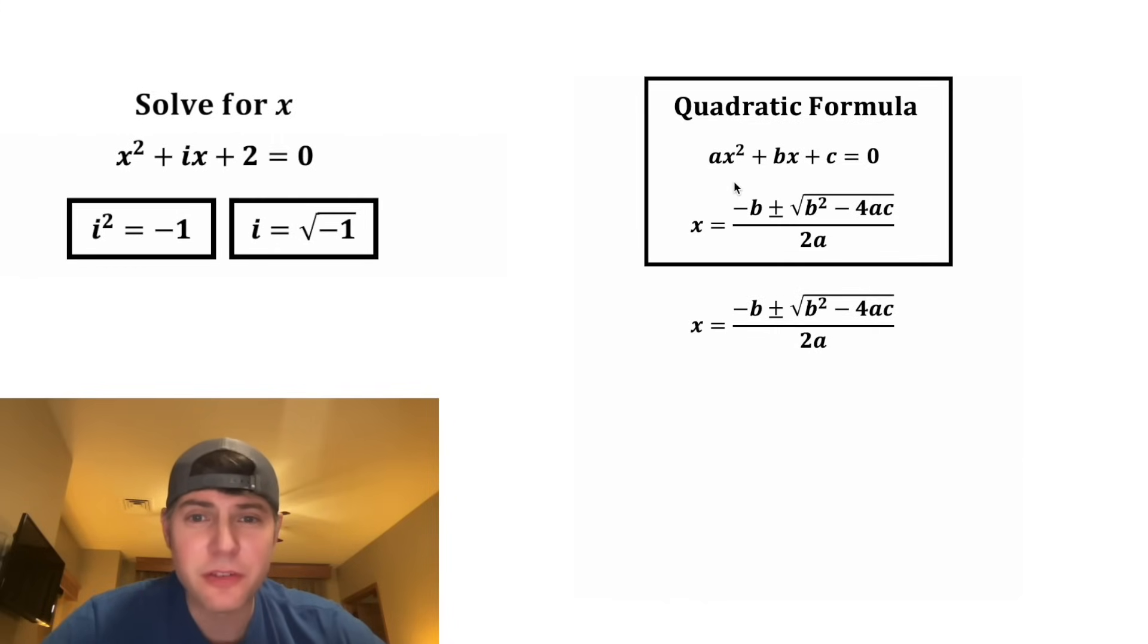So a is the coefficient for x squared, and up here that would be an implied 1. So in the place of this a, we can plug in 1, and the same thing for this a. And b is the coefficient for x. This is where the i comes in. So in the place of this b, we can plug in i, and we can do the same thing to this b.